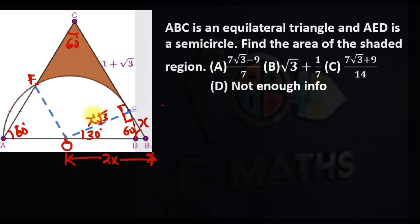So the radius of this semicircle is x√3. This side is also x√3, this side is also x√3, and this is x — that's the radius. Since here is 60 degrees, x√3, x√3 — this is also 60 and this is also 60 to complete it.